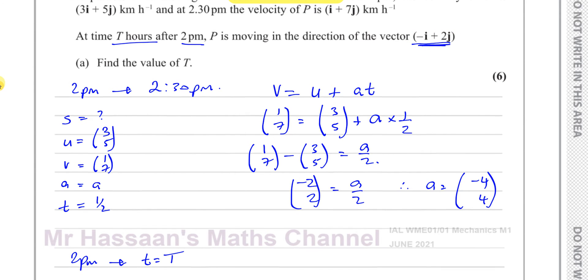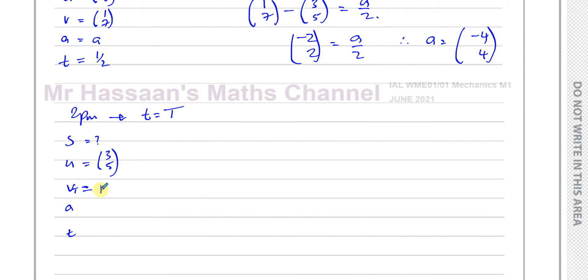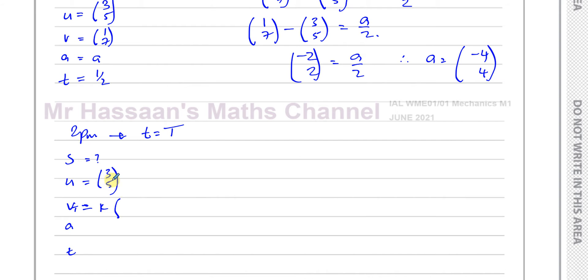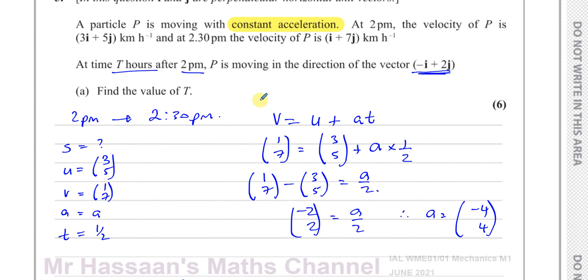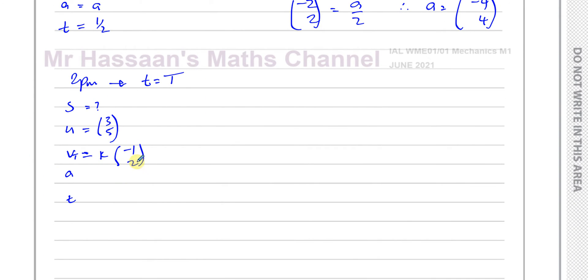So we know the direction, we don't know what the magnitude is. What I'm going to do is say it's going to be some multiple of that direction. So it's going to be k times minus 1, 2. We can't say the velocity is equal to minus 1, 2 because we don't know its magnitude. So we say some constant k times minus 1, 2. Acceleration is minus 4, 4, and time is capital T hours.